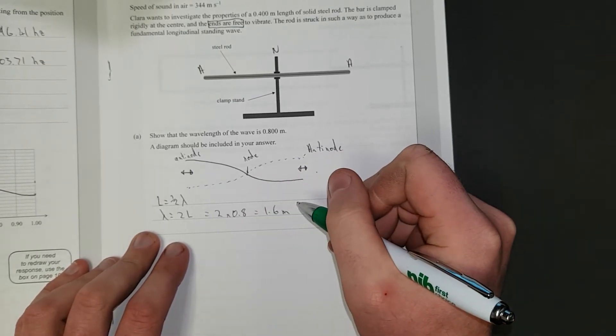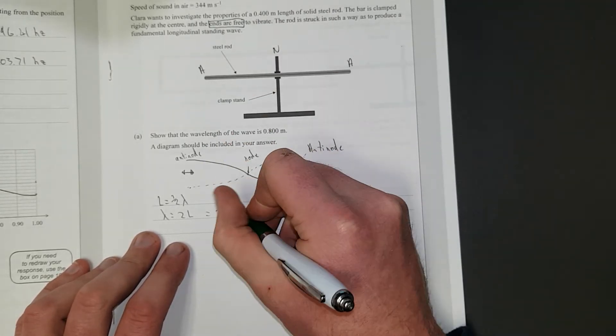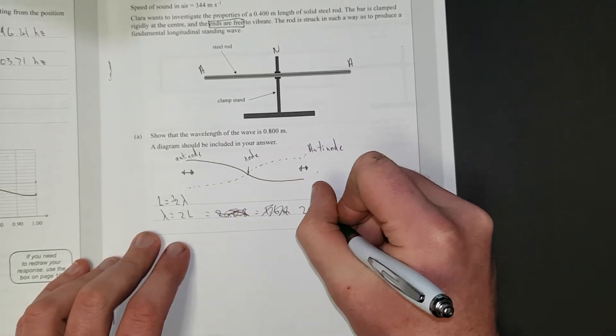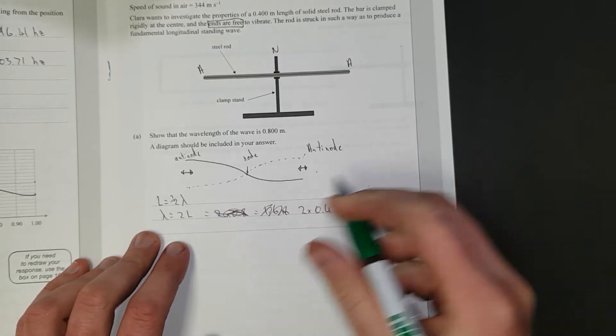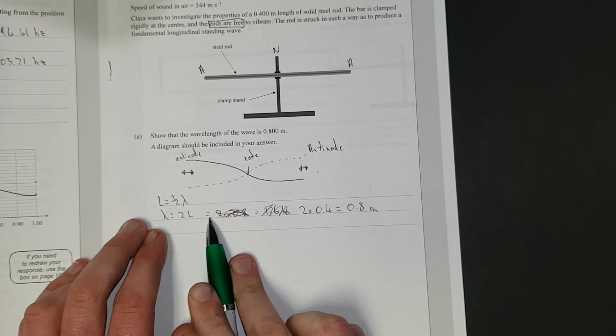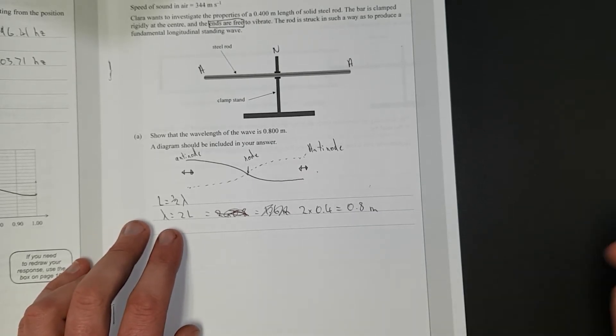What am I talking about? Oh, what am I talking about? No, no, no, no. The length is 0.4. I'm an idiot. 2 times 0.4 is equal to 0.8 meters. Right. It's a show question. If you didn't have this, you didn't get the answer. Was this a merit? I can't even remember.